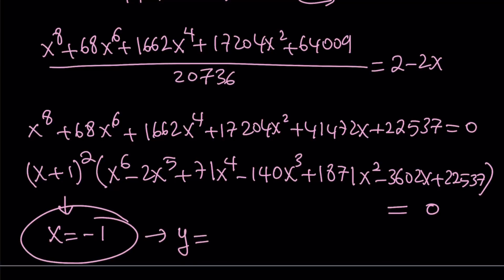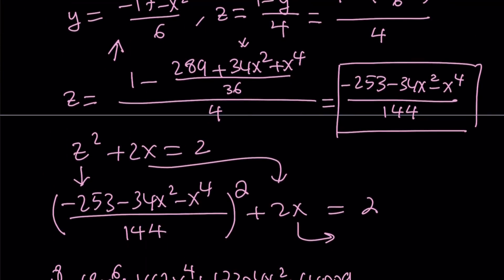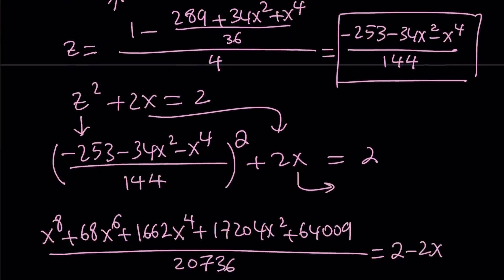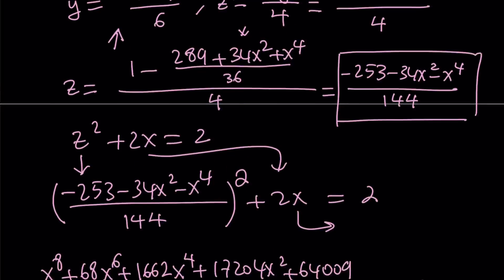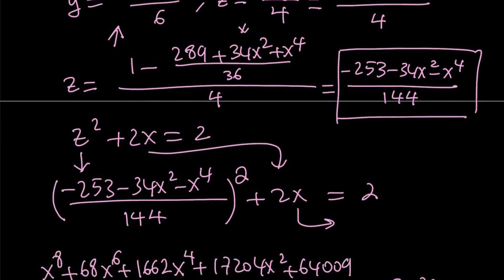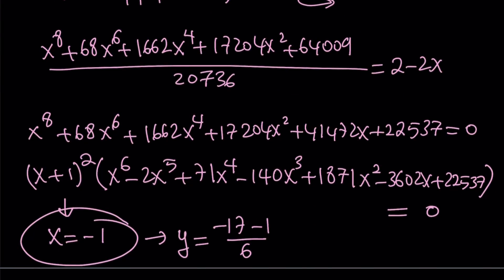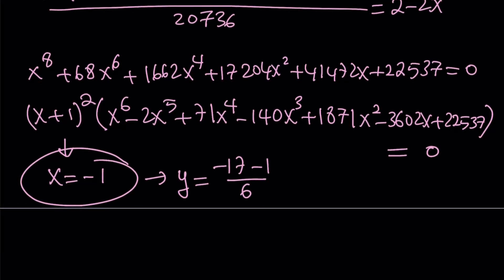y equals, now notice that y could be written as negative 17 minus x squared divided by 6. So it's just going to be negative 17 minus 1 divided by 6, right? Negative 17 minus x squared. Now be careful here. x is negative, but when you square it becomes a positive 1. That's why you subtract 1 from negative 17. And from here, y becomes negative 3.